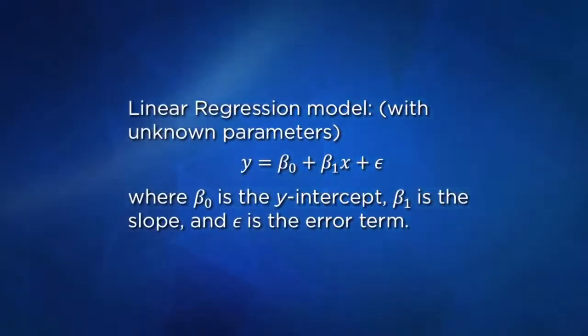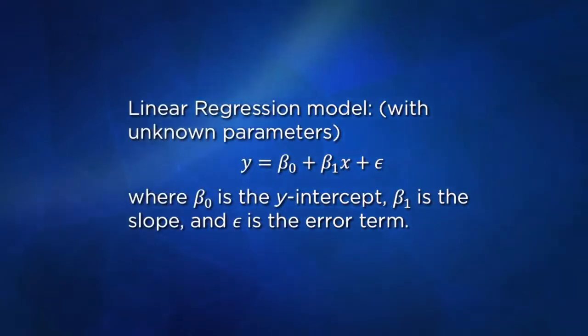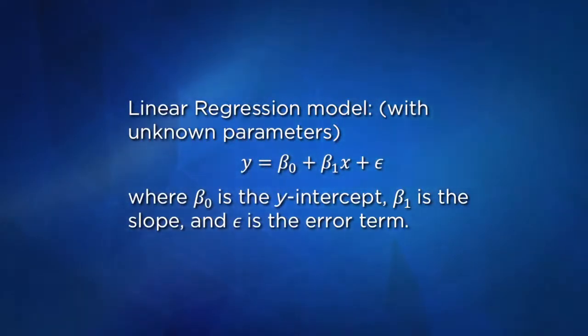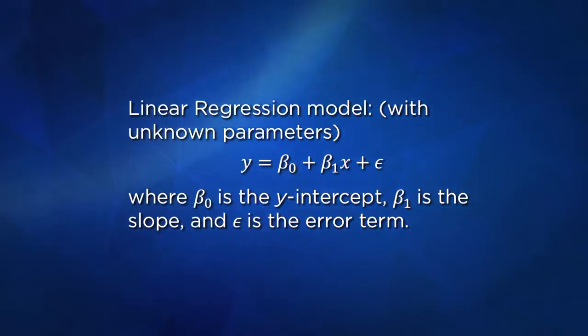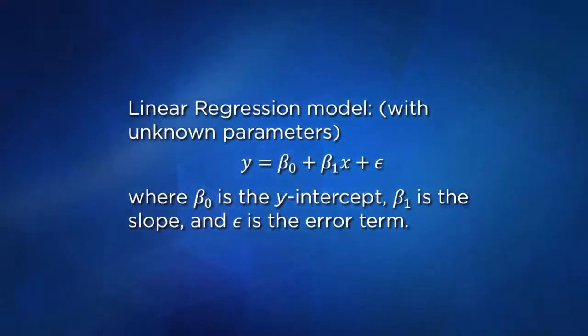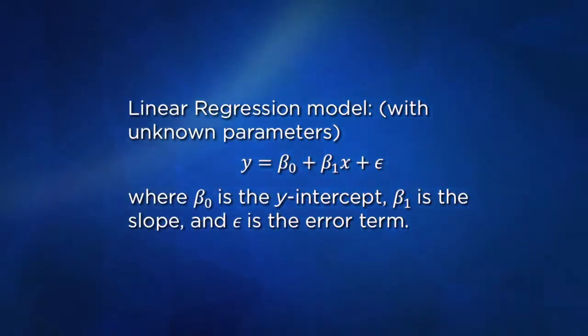The reason we minimize the square difference — as opposed to the absolute difference — is that when we're fitting a line to data we get the best estimates of the slope and y-intercept when we minimize the square differences. Here's what our linear regression model looks like. Our parameters are unknown population parameters, so we set y equal to β₀ + β₁x + ε. β₀ is the y-intercept term, β₁ is the slope, and ε is the error term. The Greek letters here indicate our model is about an underlying population.